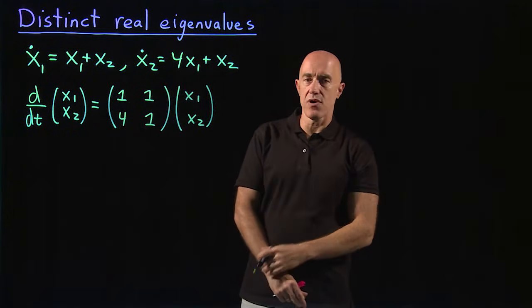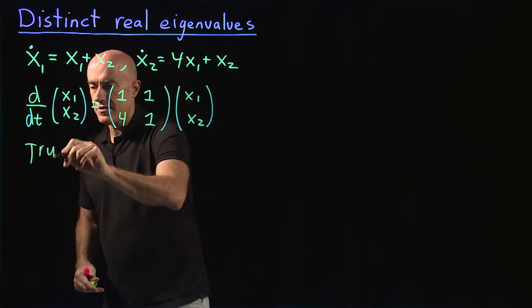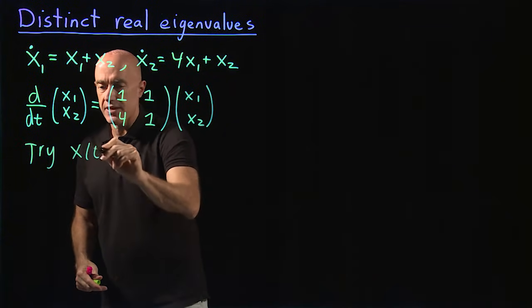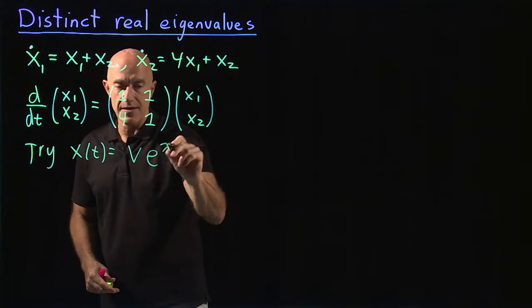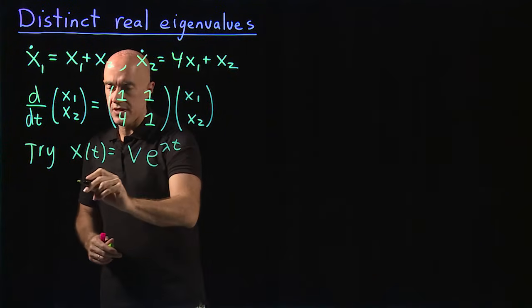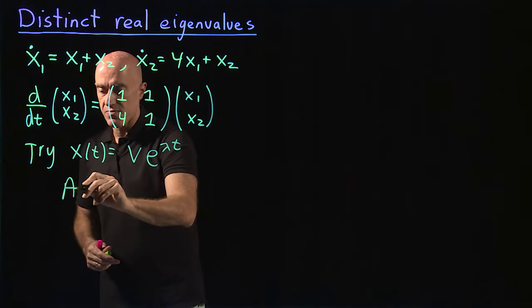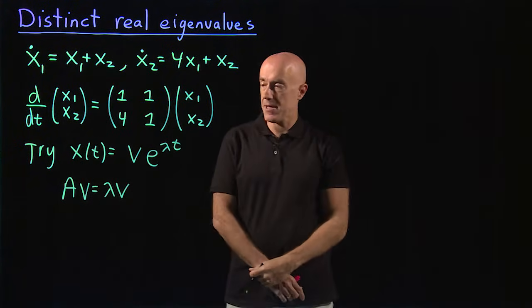We try our ansatz. So we're looking for solutions of the form x(t) equals an eigenvector times e to the lambda t. And substituting into the equation gives us our eigenvalue problem Av equals lambda v.